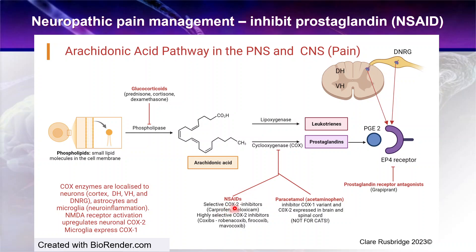We can use the selective COX-2 inhibitors, which can be very effective. Some of the earlier drugs developed for osteoarthritis management are often quite cheap. Sometimes you can get better results with the highly selective COX-2 inhibitors because of the variants expressed in the brain and spinal cord. If you haven't got a good result from one NSAID, change to another. It has been shown that switching — even going back to a less selective COX-2 inhibitor — can make a difference, as animals can develop tolerance to one NSAID over time.